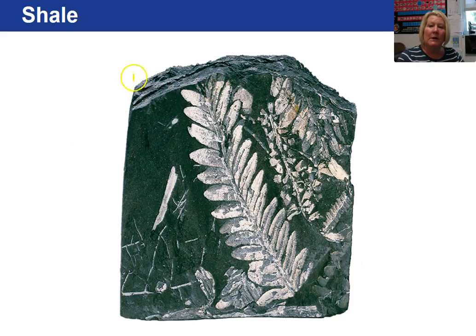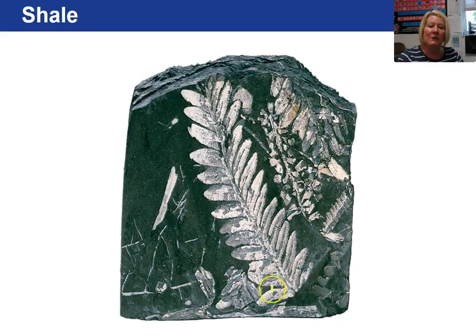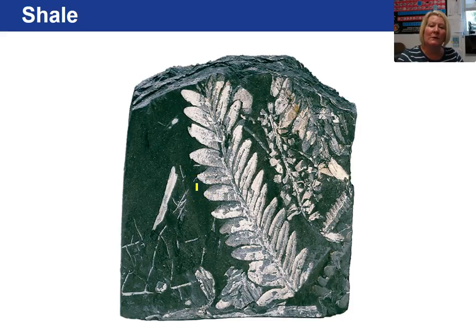Here the shale is showing its layered appearance — that's the fissility it is exhibiting. In this case, the shale has a fossil fern preserved in it, indicating a low-oxygen, high-organic environment where it was formed, such as a swamp.